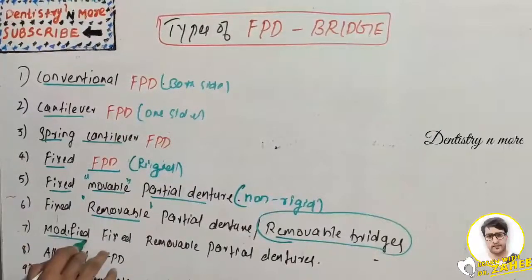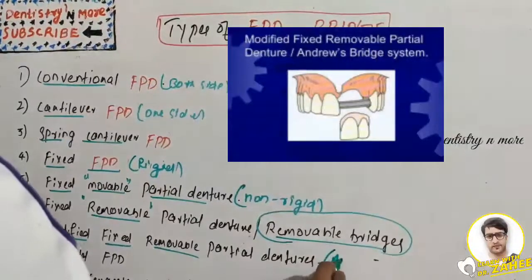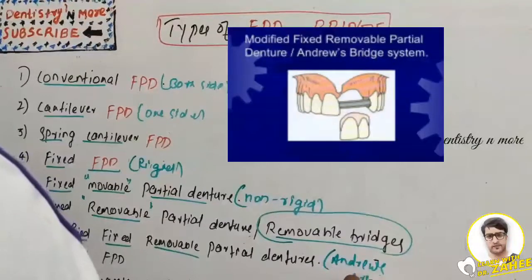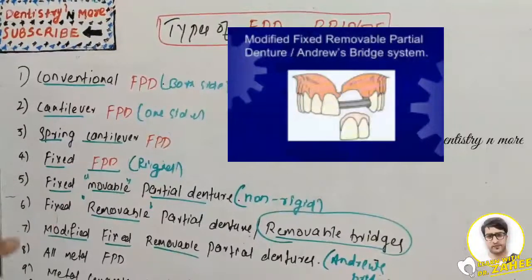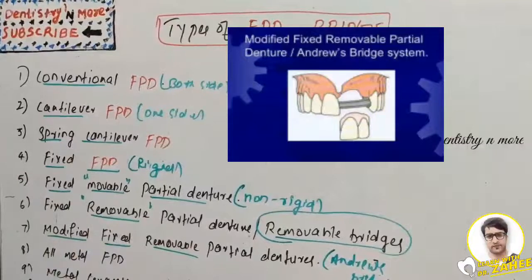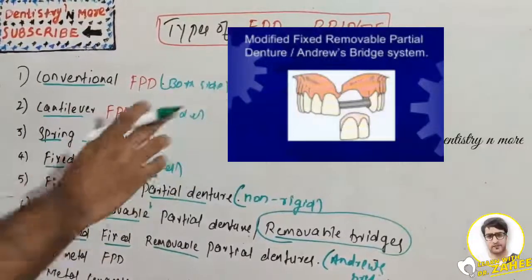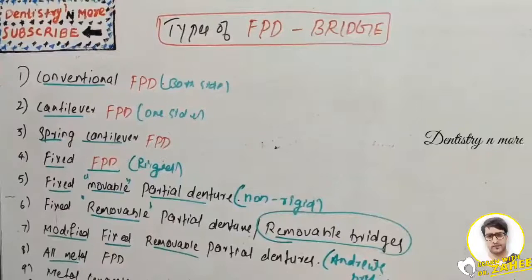The modified fixed-removable partial denture is a modification developed by Andrew, hence also known as the Andrew's Bridge System. These are indicated for edentulous ridges with severe vertical deficits. The prosthesis consists of both a fixed component and a removable component.